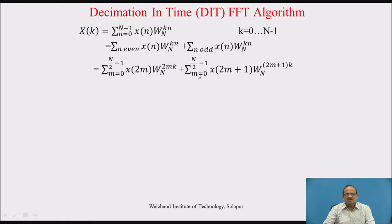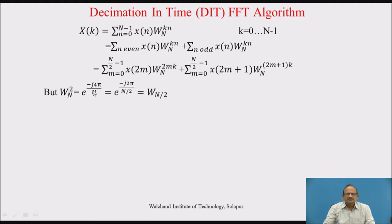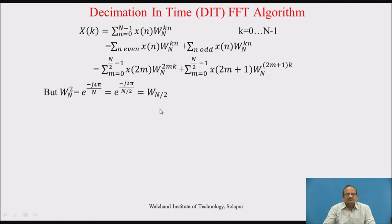This gives the even part. For the odd part, n is substituted as 2m+1, so m equals 0 to N/2 minus 1, giving x(2m+1) and W_N^((2m+1)k). Now W_N^(2) is e raised to minus j4π/N, which equals e raised to minus j2π/(N/2), which is W_{N/2}. So W_N^2 can also be written as W_{N/2}.